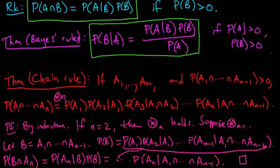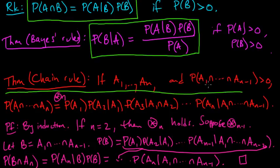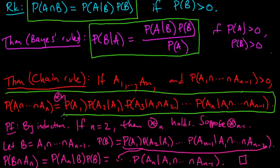So we just saw Bayes' rule and the chain rule for probabilities, and perhaps I should have mentioned where this assumption here, that the probability of the intersections up to n-1 is positive, comes into play.